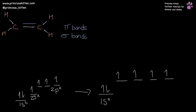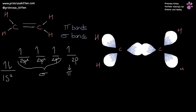Now our single bonds, our sigma bonds, are going to be these three here, and they are all going to be exactly the same — these are going to be two SP2 orbitals. And then the last one on the end is going to form our pi bond. These are going to be the hybridized SP2 orbitals, because we have one from the S and two from the P, making our sigma bonds.